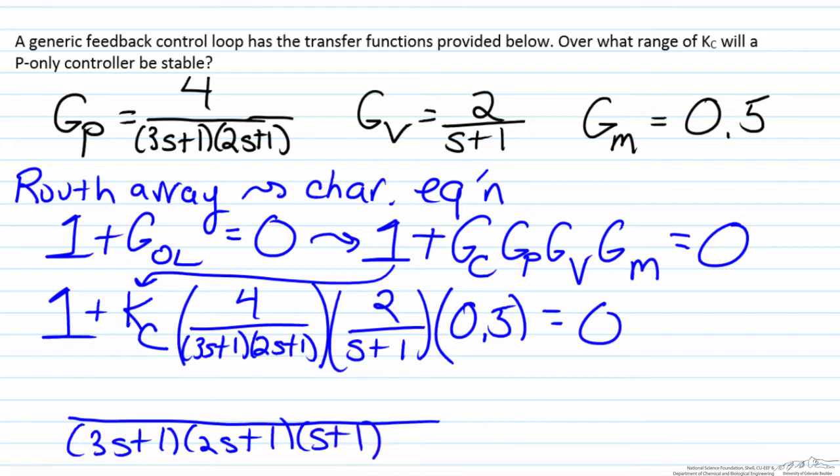For the one, our denominator will now reappear in the numerator because that will be the 1/1 term. For our second term we have KC times 4 times 2 times 0.5 in the numerator, so this will just become 4KC, and this all equals zero.